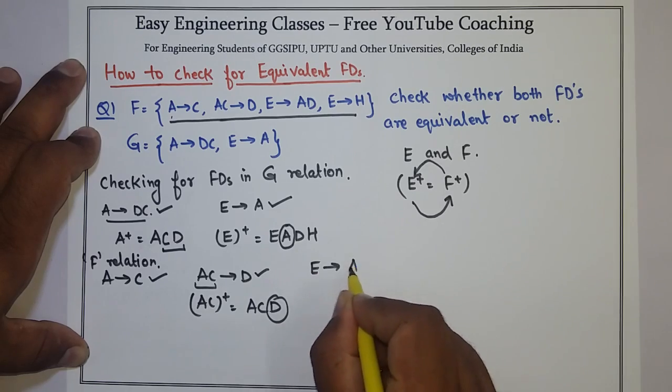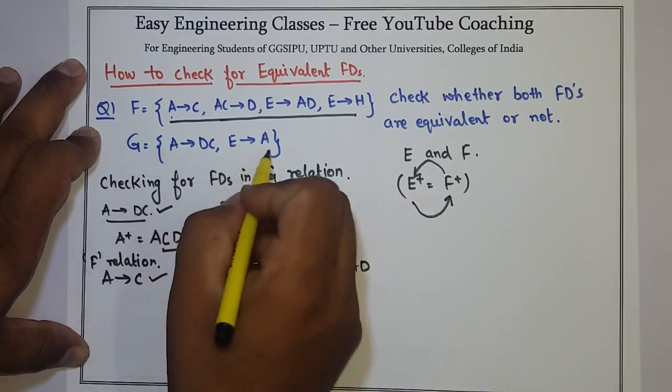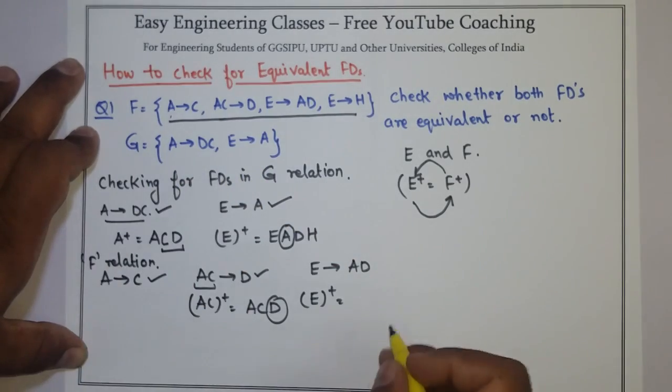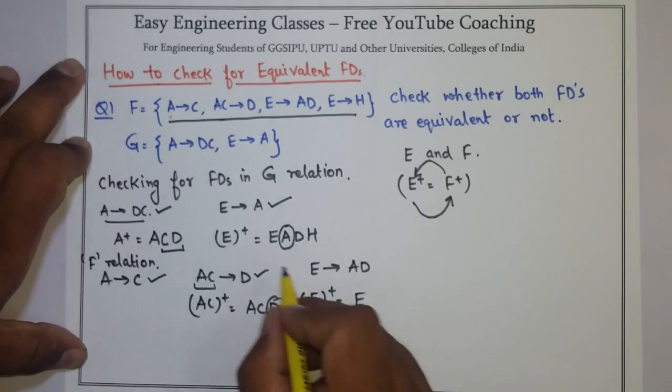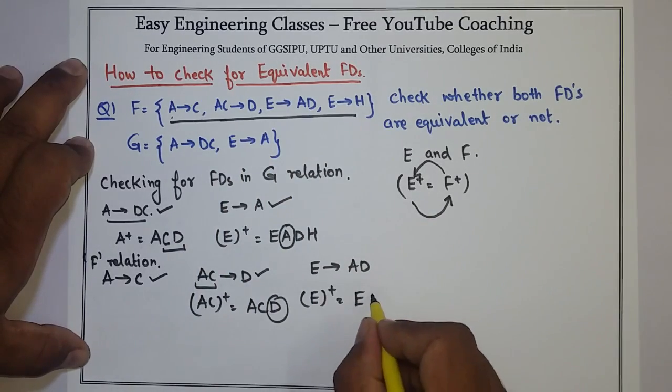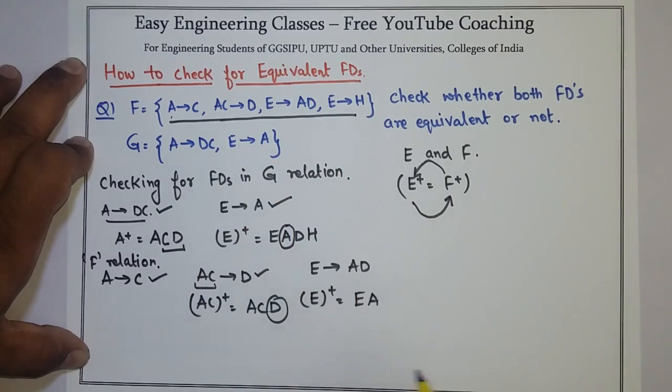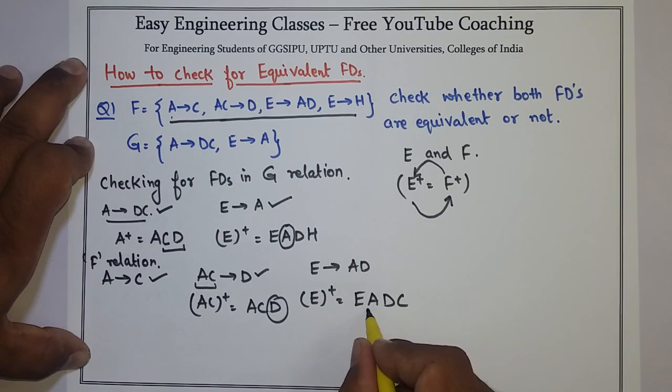Next, E determines AD. We will find E's closure with respect to G's FDs. So E plus is E. From E I can get to A, so EA, and from A to DC, so DC. As you can see that in the closure there is a term AD, so this is also correct.